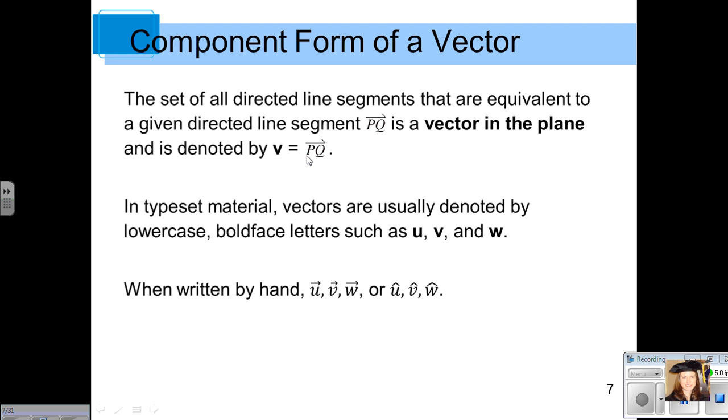When you're looking at vectors in your textbook, on a test, on homework, these vectors are usually denoted by lowercase boldface letters such as bold U, bold V, and bold W. However, when you're writing these by hand, we will often use the little arrows above or these caret symbols. So just be familiar with the different ways of expressing those either in typeset on the web or when you handwrite them.